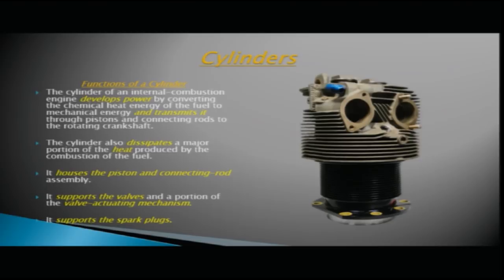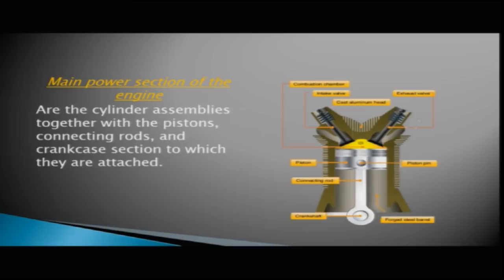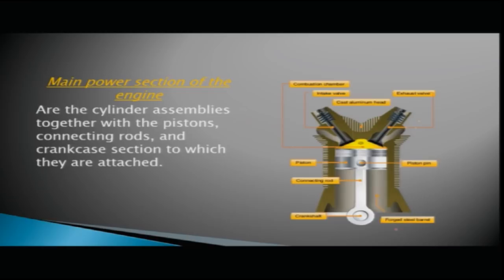In the diagram you can see the cylinder with the piston and connecting rod inside. One end of the connecting rod is attached to the piston pin and the other end to the crankshaft. Combustion takes place on top of the piston — fuel and air mixture is burning — and you can see the intake valve, exhaust valve, cylinder head area, and cylinder barrel area.